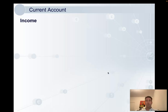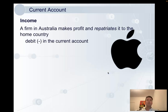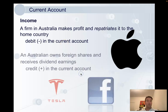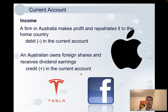Another way that money moves in the current account is income. Let's say Apple makes profits here in Australia — they're going to send that money back to their shareholders, most of whom would be based in the US. So that's money leaving the country; it's a debit in the current account. On the other side, if I own shares in foreign companies like Tesla or Facebook, I receive a share of their profits, and when that money comes into my Australian bank account it's a credit in the current account.